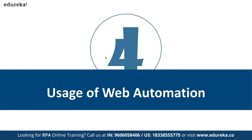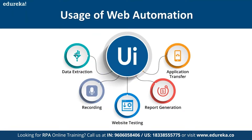Now let's look at the uses of web automation. First, data extraction — you can extract all data from a browser or open website. Second, recording — capturing clicks and keystrokes so the robot can replay them. Third, website testing — verifying whether elements like buttons work correctly on a new website. Fourth, report generation — automatically generating reports from websites. Fifth, application transfer — migrating data to the cloud or other platforms.